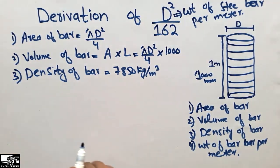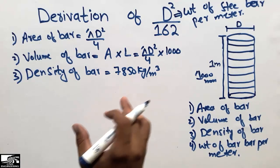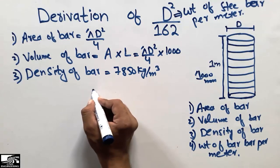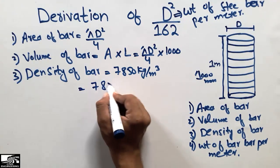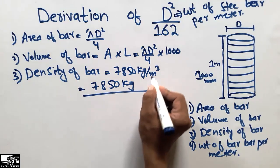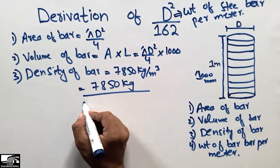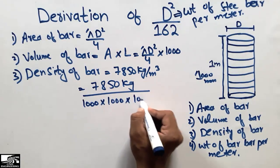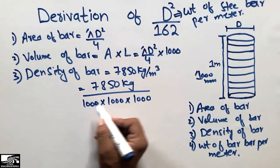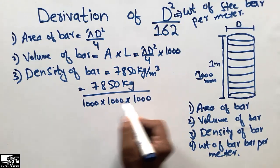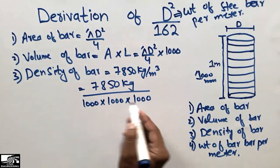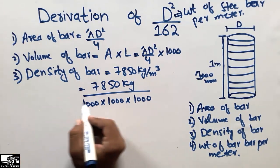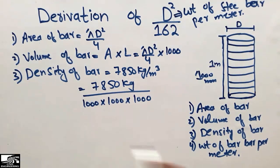Now, to find the weight of the bar per meter, let's first convert the density into millimeter units. So it will be 7850 kg divided by cubic millimeters. Since one meter equals 1000 mm, and there is a cube, we multiply 1000 three times. This gives us the density in kilogram per cubic millimeter units.